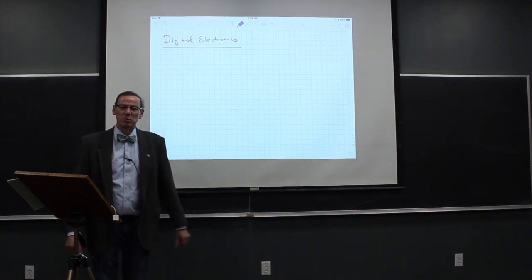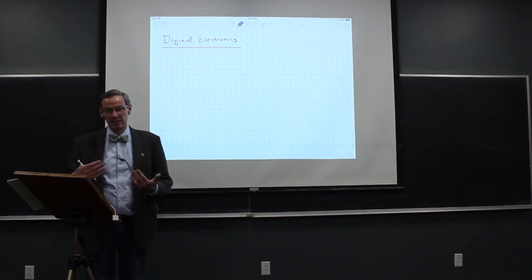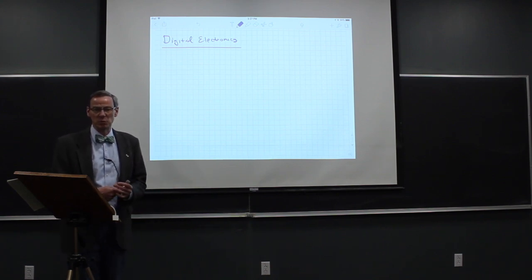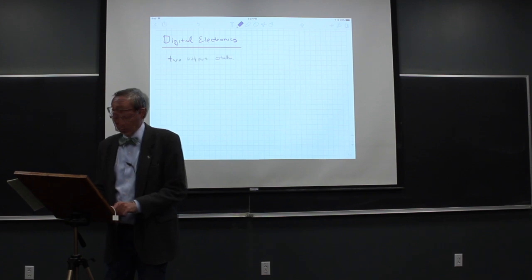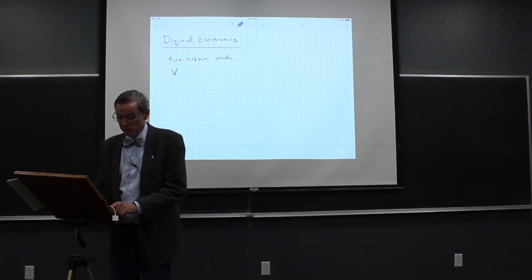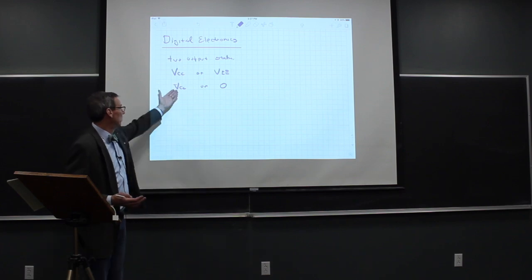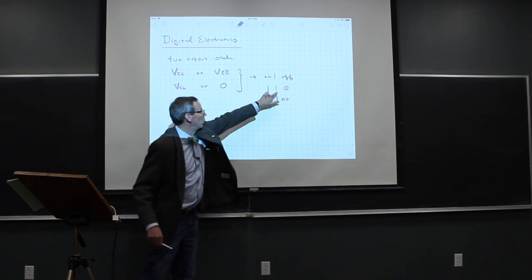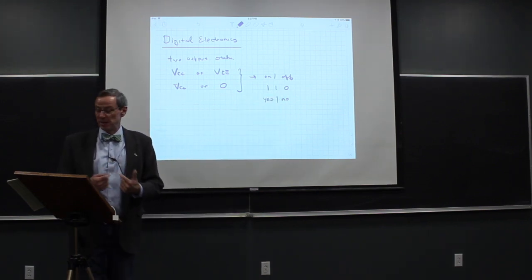Recently we talked about comparators, which are systems that have two output states depending on the relative size of two different values. This leads to digital electronics where we have two output states — often VCC or VEE, or VCC or zero — used to represent on/off, one/zero, yes/no. These binary digits, ones and zeros, are the basis of a computer.